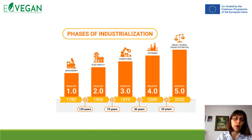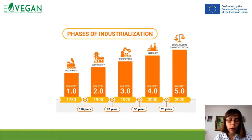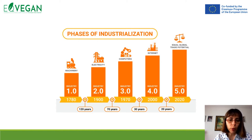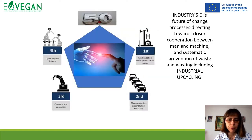We have had different phases of industrialization — Industry 1.0, 2.0, 3.0, 4.0 — and now we are in the era of 5.0. We need to think about Society 5.0, which asks consumers what they want, and therefore we need optimization of processes and data collection. Data is really important in 5.0 industrialization and the machine leads the whole process. Therefore, we need to monitor and optimize processes. Industry 5.0 is the future of change, directing processes towards closer cooperation between humans and machines.